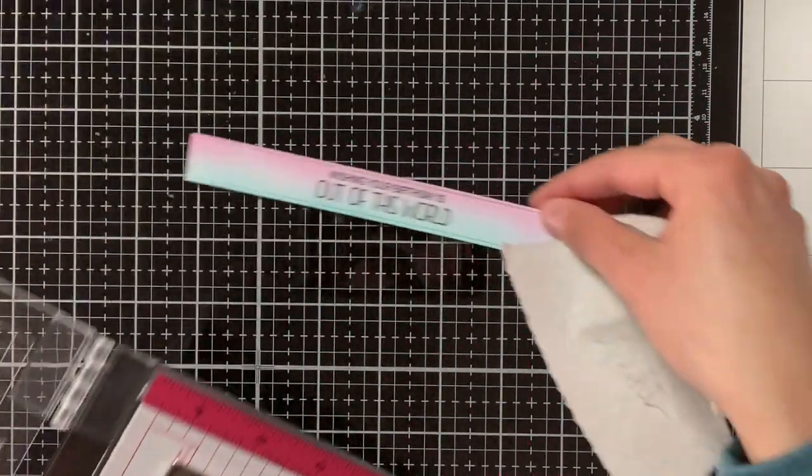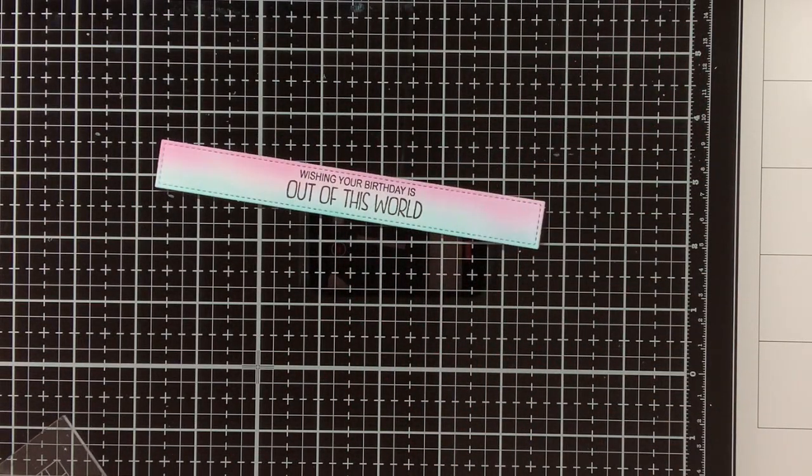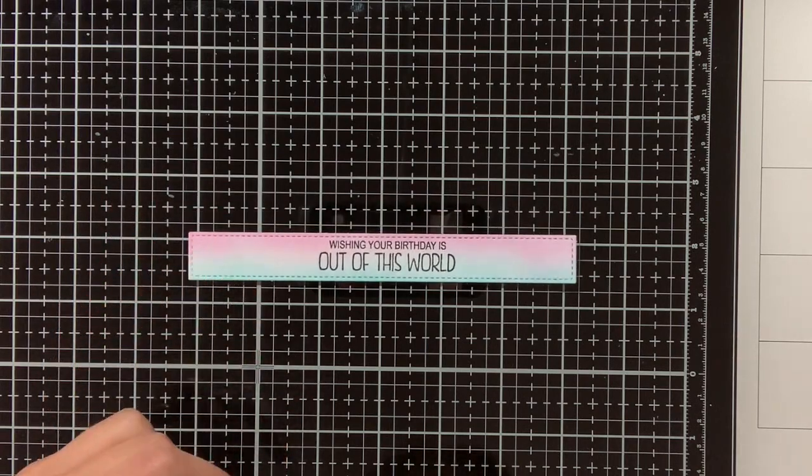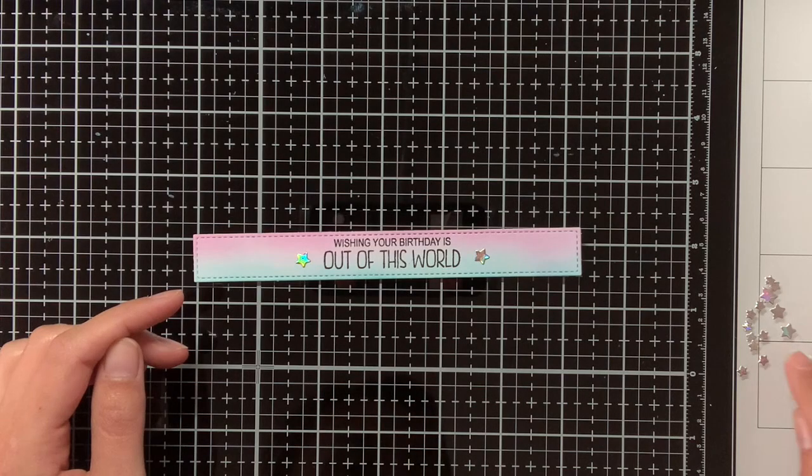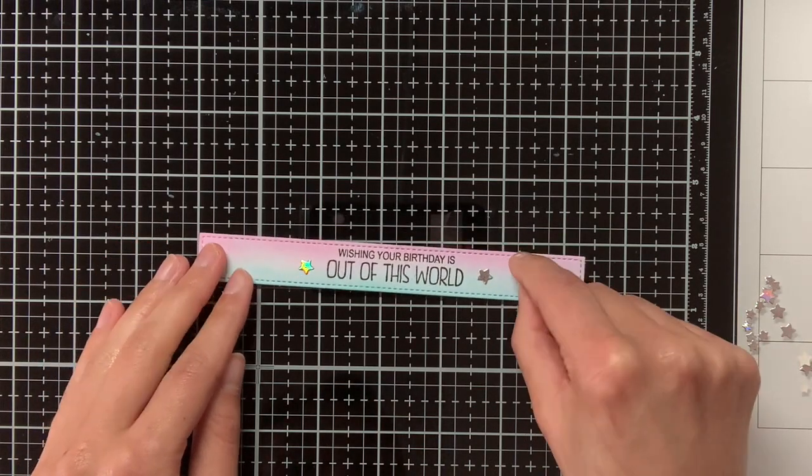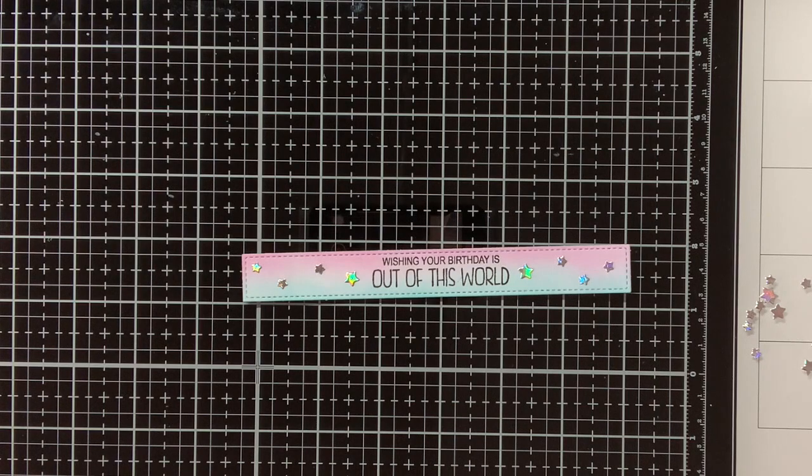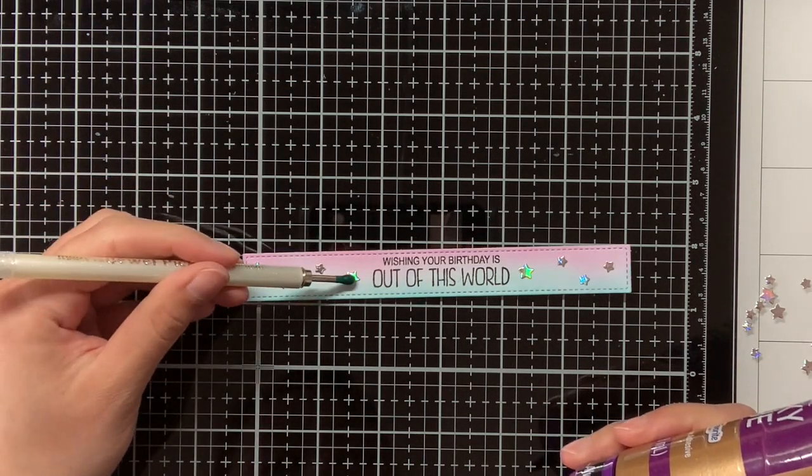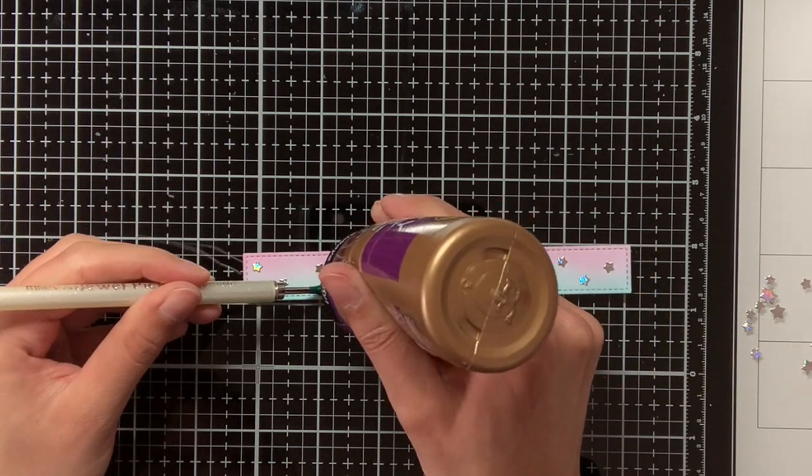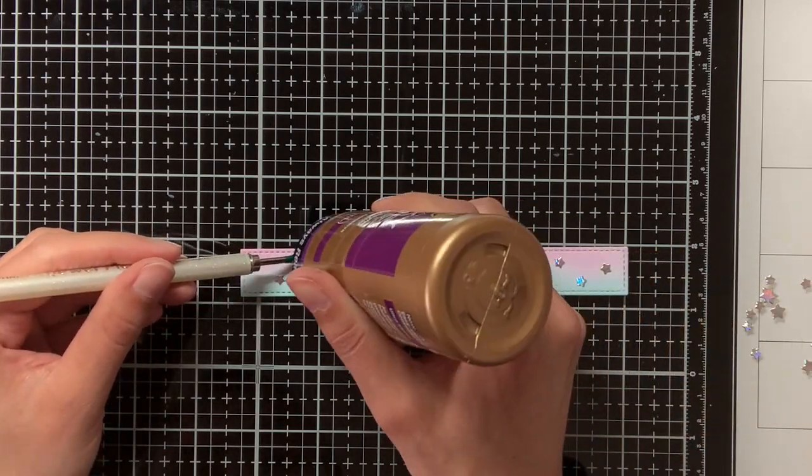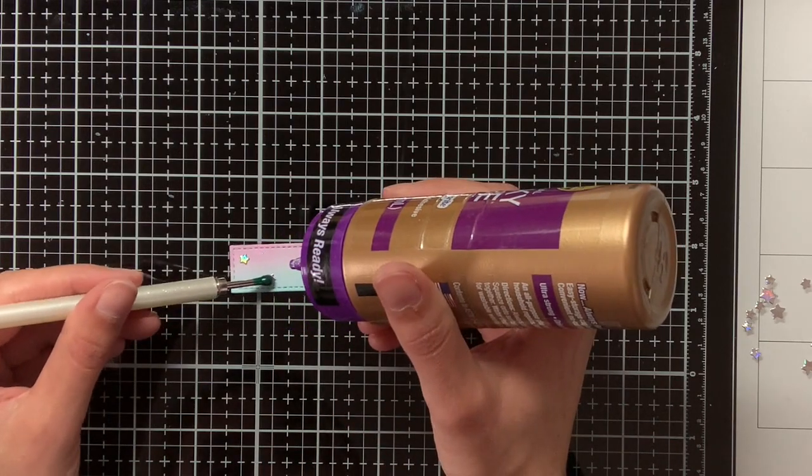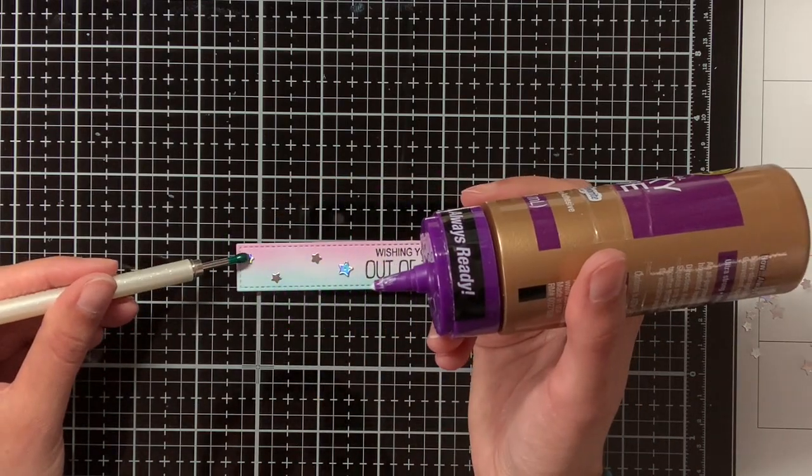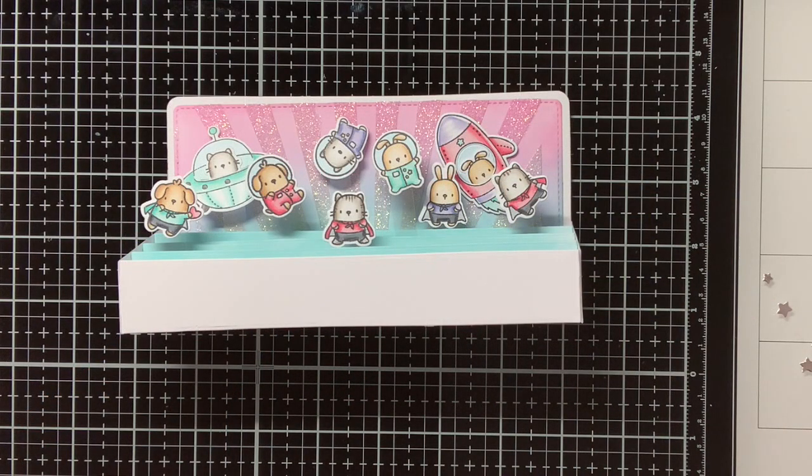And then I also wanted to decorate the sentiment and also the box a little bit further. So in the Slim Scenescape Builder die, there is also this little die which die cuts a lot of stars. So out of holographic cardstock I have die cut all these stars, and I am going to adhere these next to the sentiment and also on the background of my box card. When working with small pieces like this, I like to use my embellishment wand to pick up the pieces and then lay it down where I want them to go.